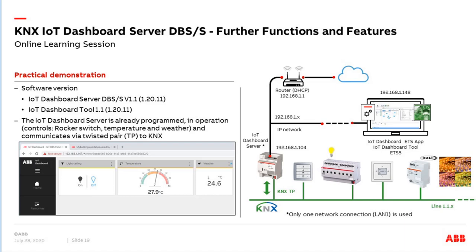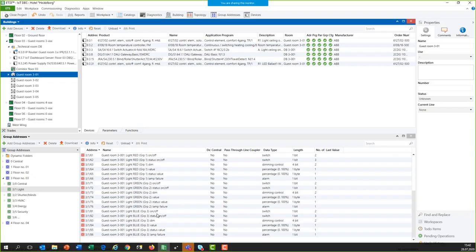Now let's come to the most part of today — the practical demonstration. In my home office, I have a small installation with an IoT Dashboard Server communicating via KNX twisted pair. I've connected a switch actuator, DALI gateway, and room temperature controller. Via the rockers I can operate a switch actuator and control LED strips with different colors — red, green, blue. I have a prepared project with elements from the last session, and based on this one we continue now. I'll share my desktop.